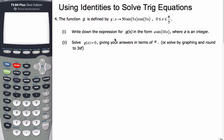All right, here we are, it's Mr. Rops and Mr. Coe, and we're going to use identities to solve trig equations. Right now, we have this situation where g is 50 sine 5x cos 5x. X is between 0 and pi by 5, and we want to write an expression for g of x in the form a sine 10x, where a is an integer.